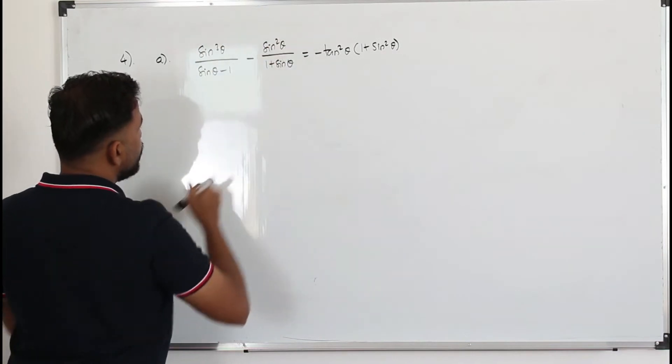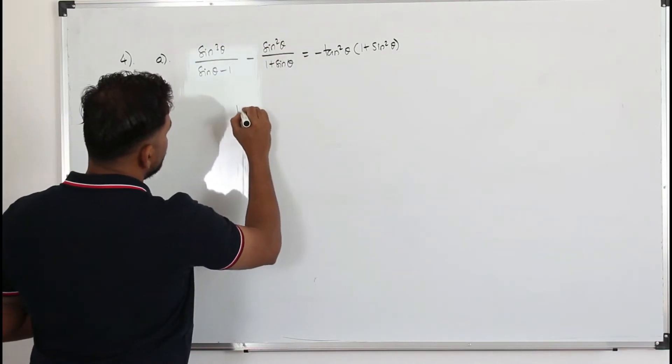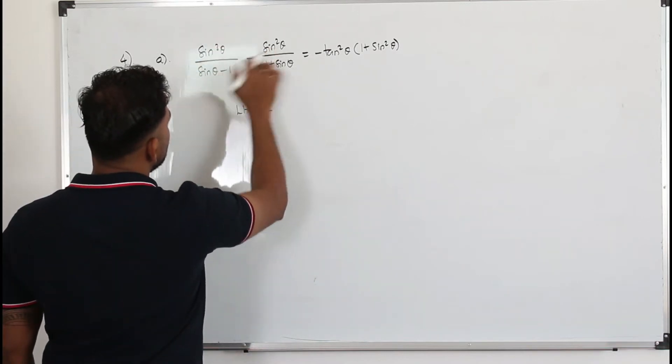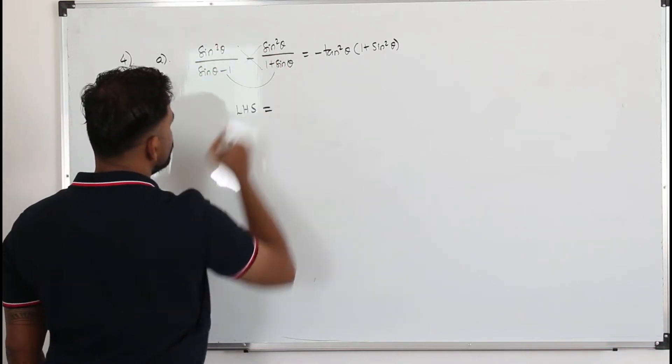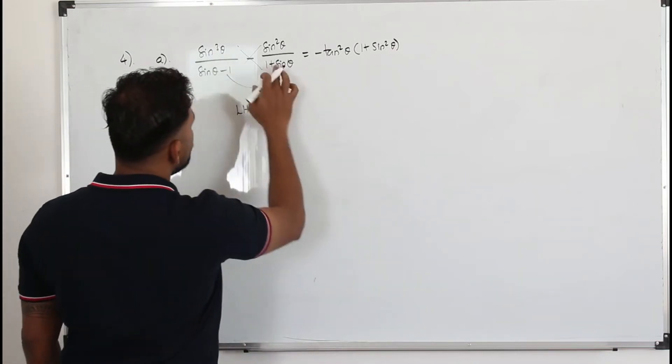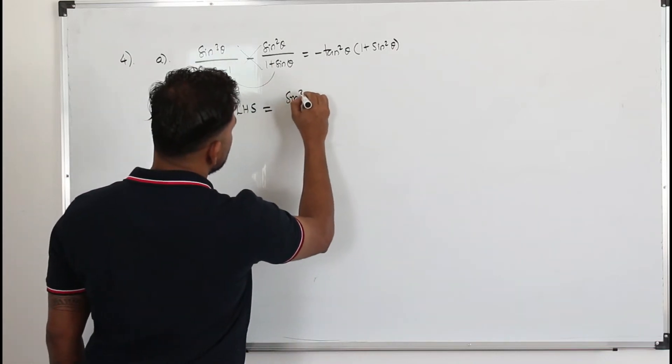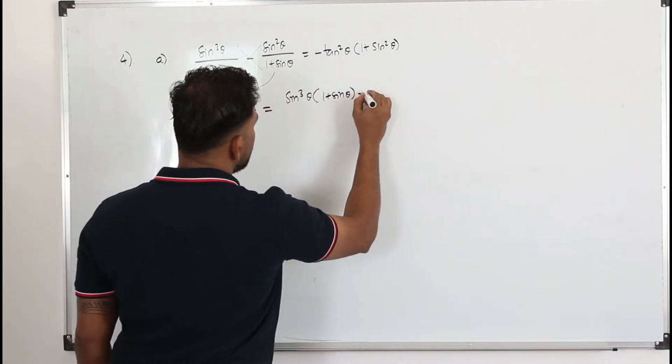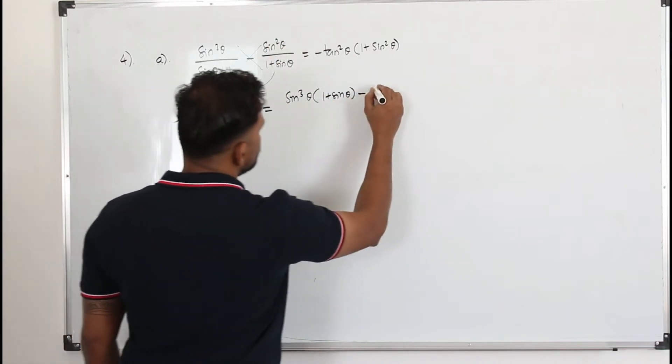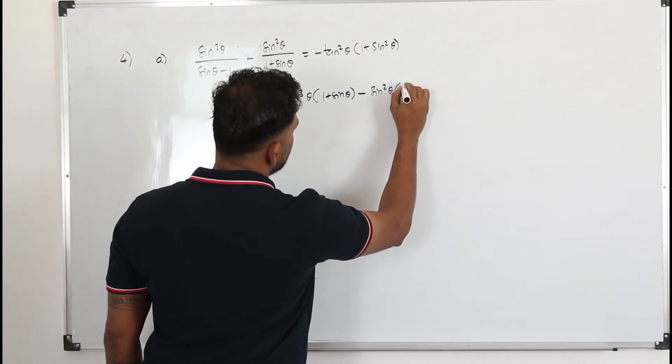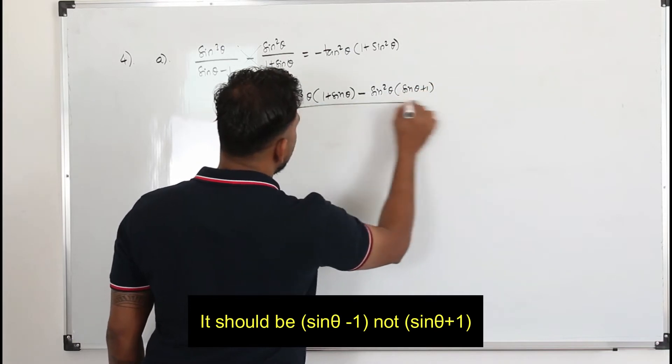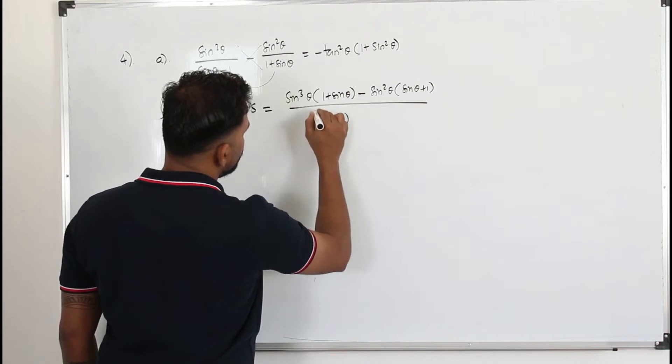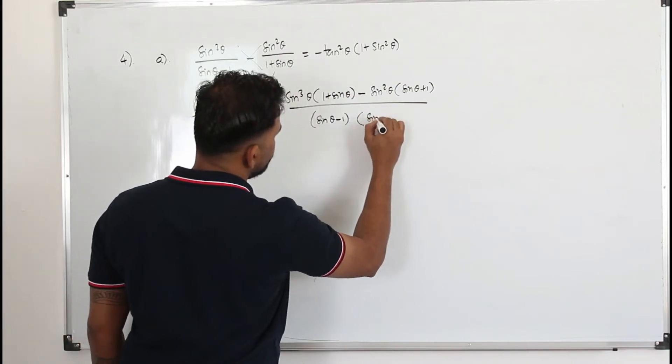I'm going to start from the left hand side. We take this whole thing and cross multiply to make it as a common denominator. Sin³θ times (1 + sinθ) - there's a common negative sign - sin²θ times (sinθ + 1), divided by (sinθ - 1) times (1 + sinθ).